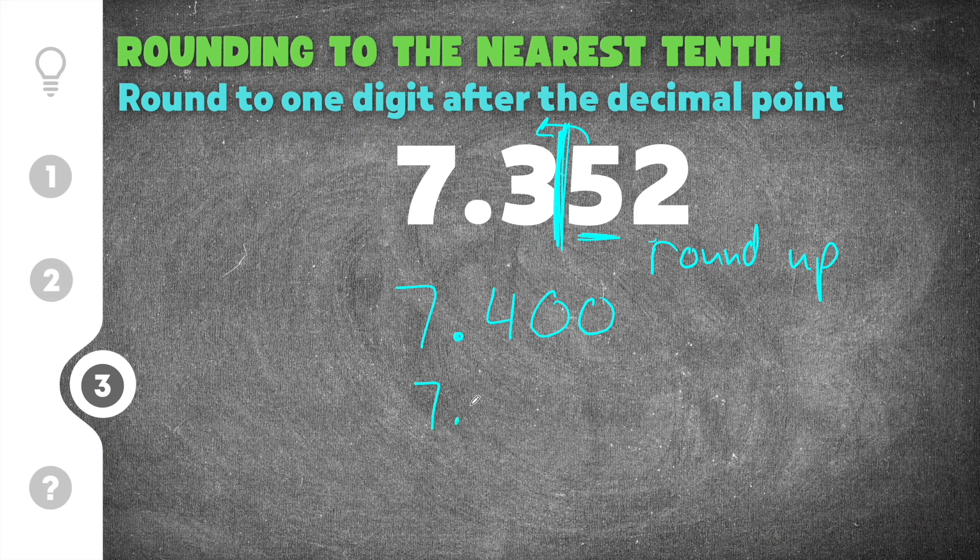So when I rewrite my final answer, it's just going to be 7.4 because like I said in the other problems, I don't have to include the zeros. So 7.352 rounded to the nearest tenth is going to be 7.4 because the five rounds the three up to a four.